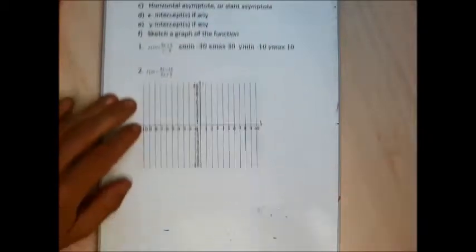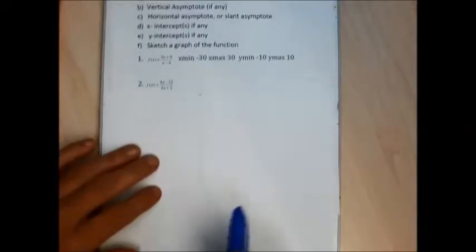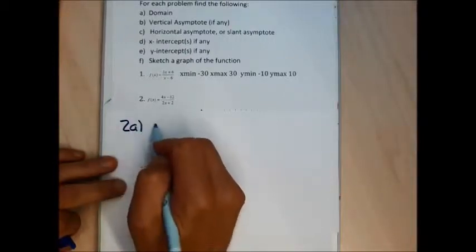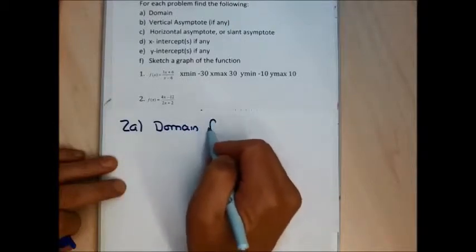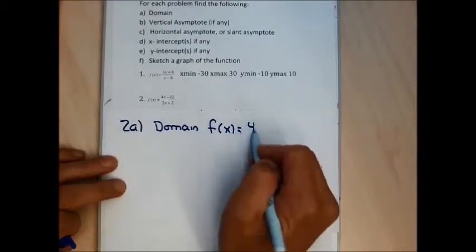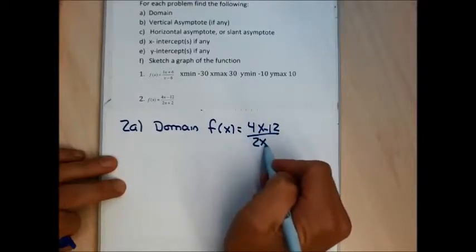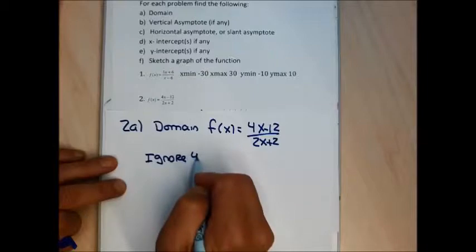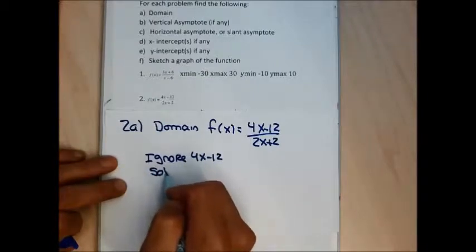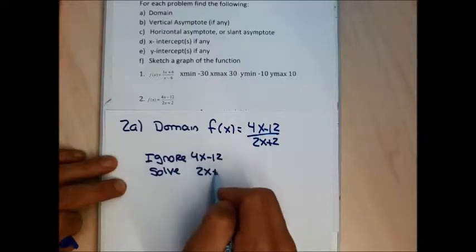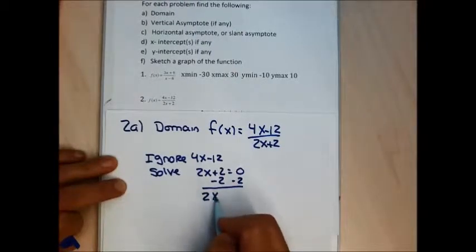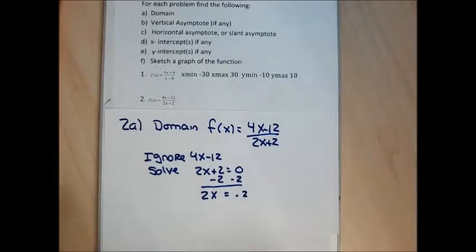Let me jump into problem 2. Problem 2 gives me a fraction and asks me to find a few features of the graph. For 2a, I'm asked to find the domain of f(x) equals 4x minus 12 over 2x plus 2. When we find the domain of a fraction, we ignore the numerator and solve the denominator equal to 0. When I solve 2x plus 2 equal to 0, I minus 2 from both sides and divide both sides by 2, giving me x equal to negative 1.